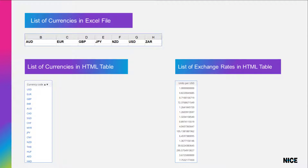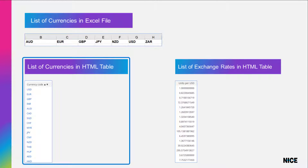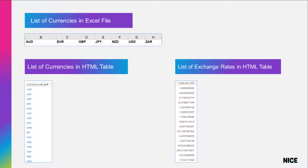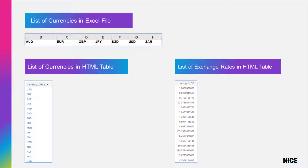Our general approach will be as follows. First, we will populate a list with the names of the currencies we are interested in by reading the list from the Excel file. Then, we will create a list of all the currencies listed in the table on the website by reading the first column of the captured data. Next, we will create a list of the actual exchange rates by reading the third column of the table. Finally, we will parse through the long lists we created from the website to find the data we want and will then write that to the Excel file.